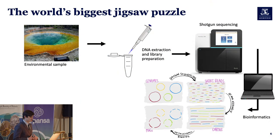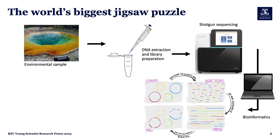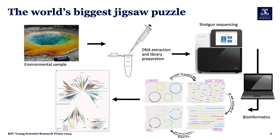After sequencing, we move on to the bioinformatic stage. This involves de novo assembly, where we piece together the short DNA fragments to reconstruct longer sequences, and metagenomic binning, which groups sequences based on common attributes. This allows us to reconstruct genomes and obtain ecological and evolutionary insights, such as updating the tree of life.